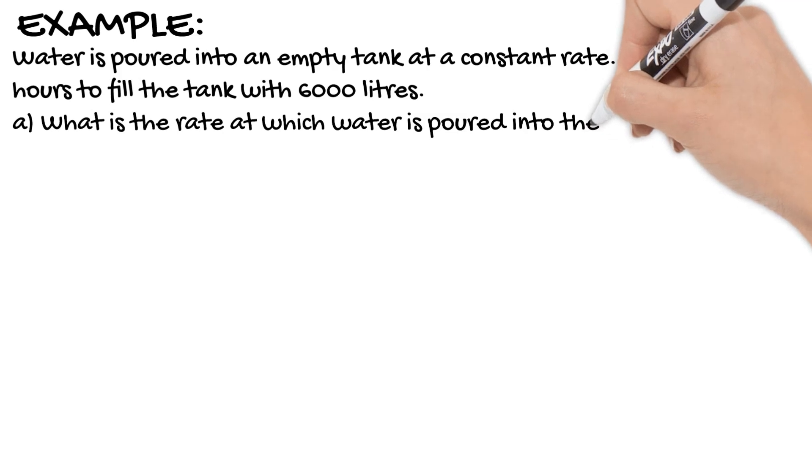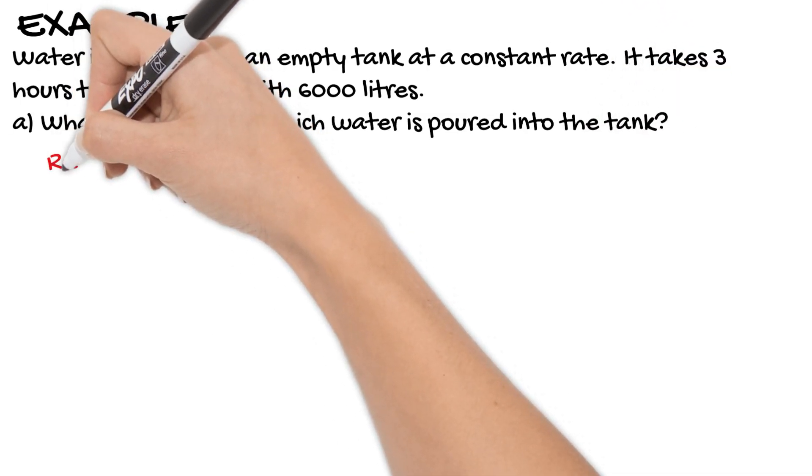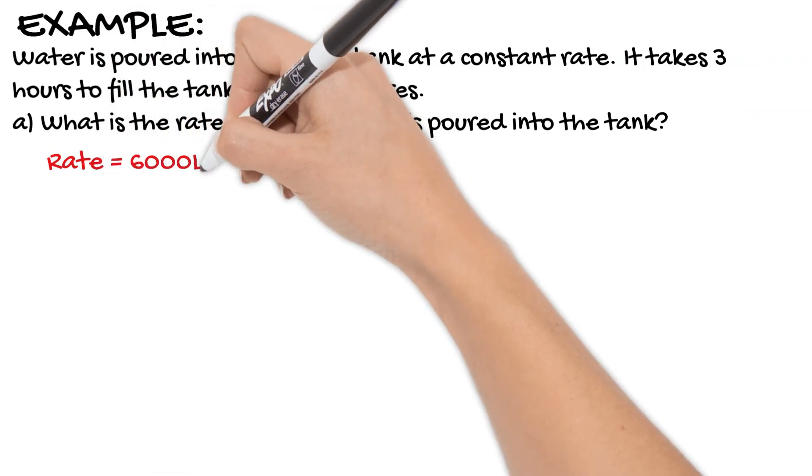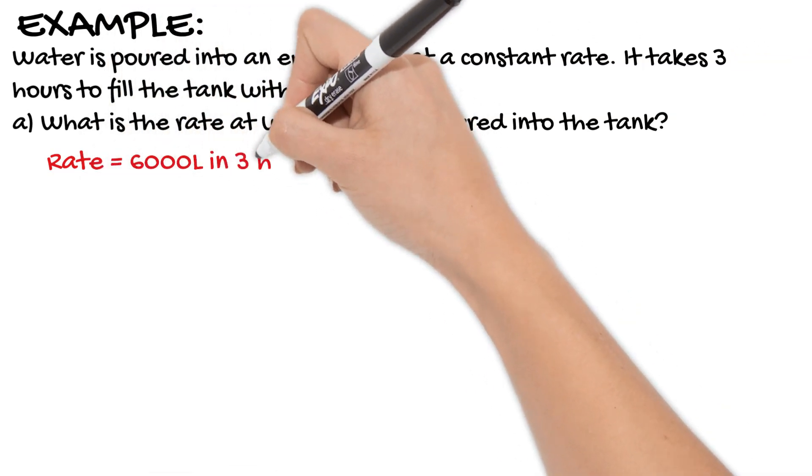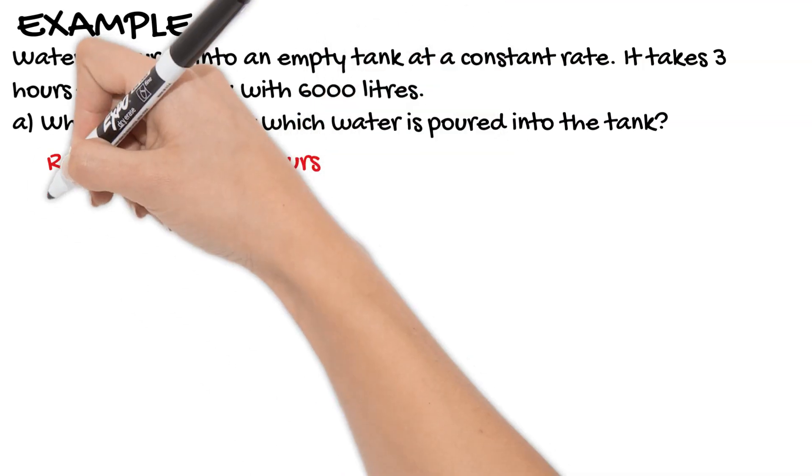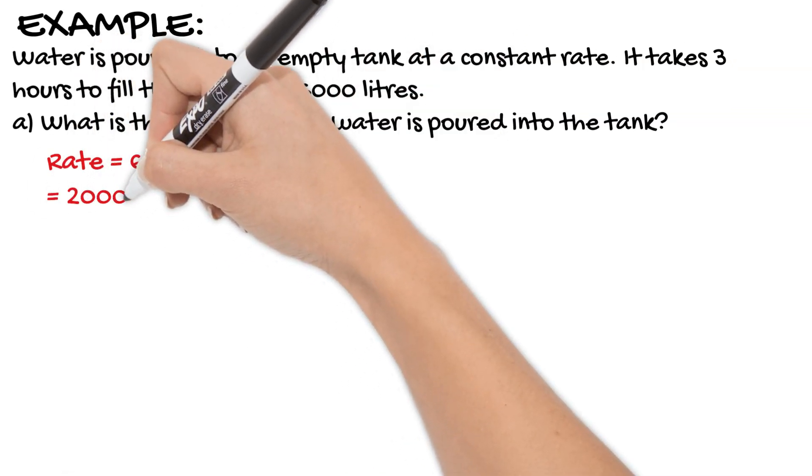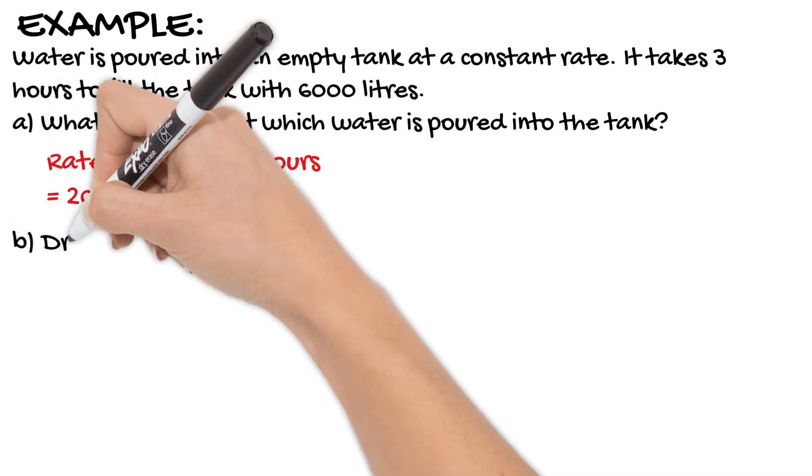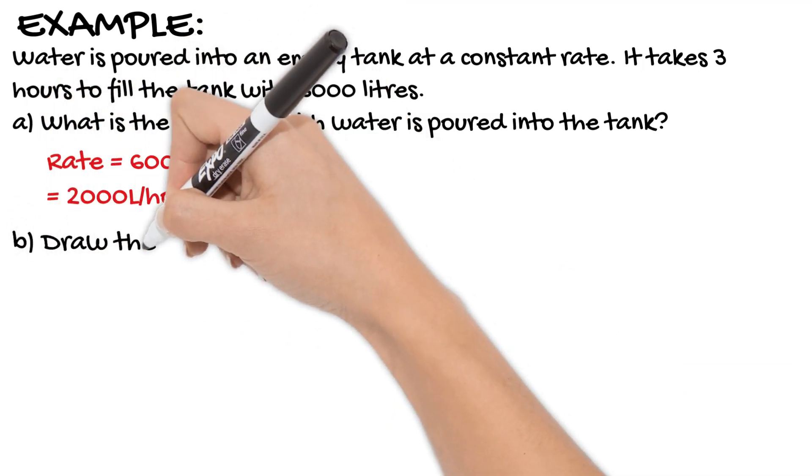Now t is our what we call our independent variable. So time moves on no matter what. The volume however is only going to change with respect to time. So because of that, we know that our t is actually our x value and V is our y value.